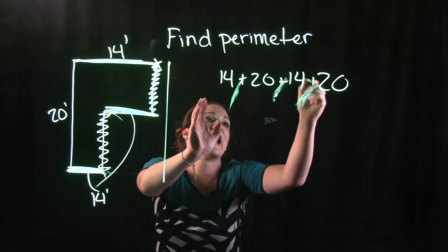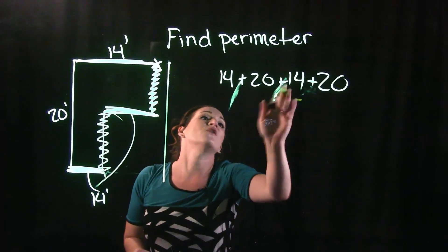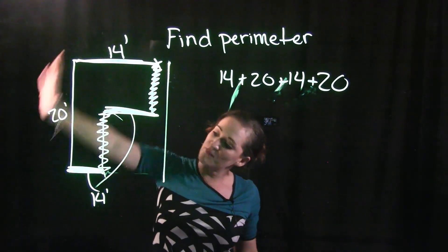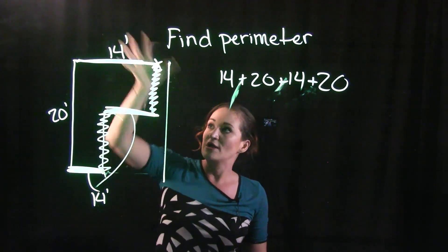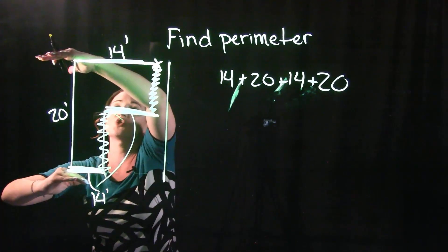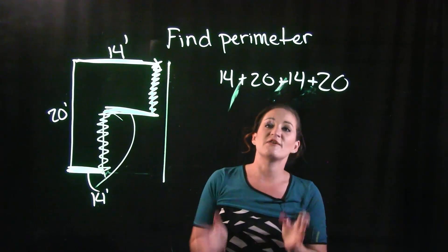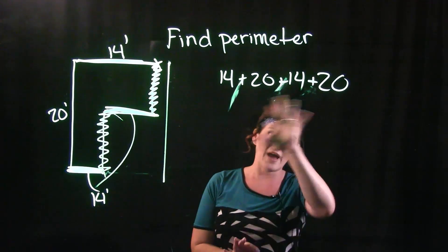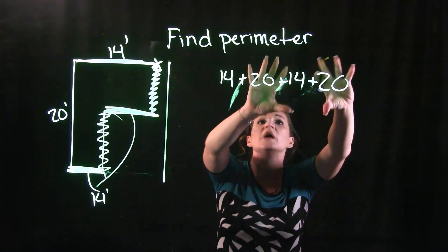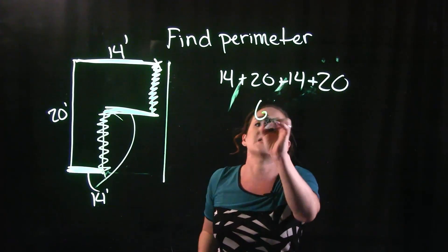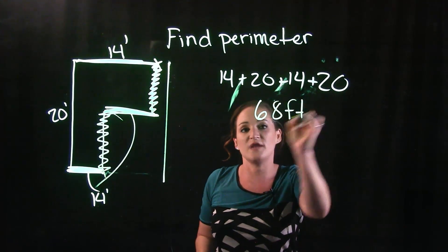I don't know why I keep putting commas. I'm supposed to be adding these together. We do know finding perimeter, you add up the distance all the way around. So 14 feet plus 20 feet plus 14 feet plus 20 feet. That is going to give me the total perimeter of this. So if I add all of these up together, let's see, that is going to give us 68 feet total.